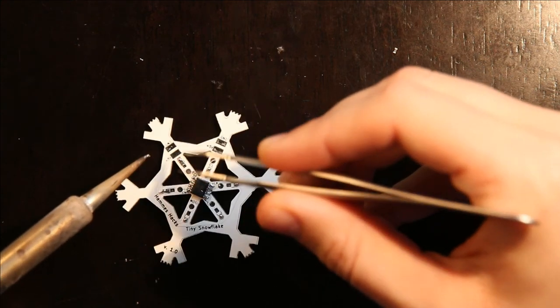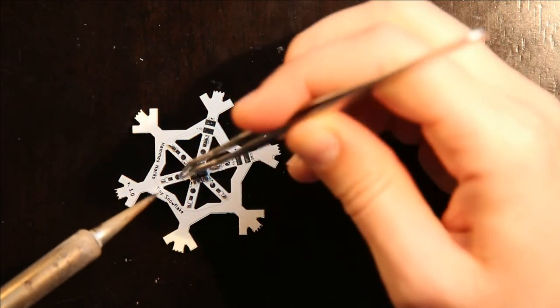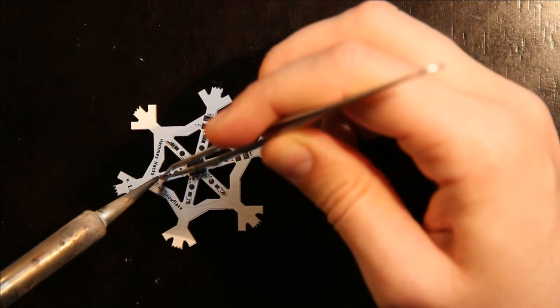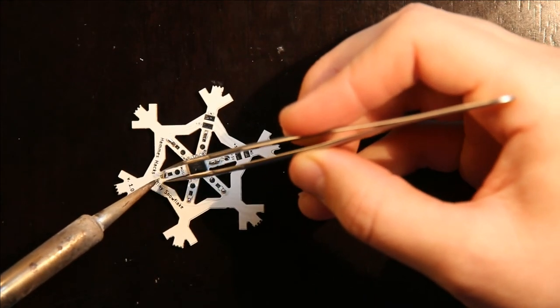Resistors also have the tendency to get dropped in places, and then you find them months later when you're doing a project, and if you solder the wrong size on a project, it's easier if you can check that immediately.